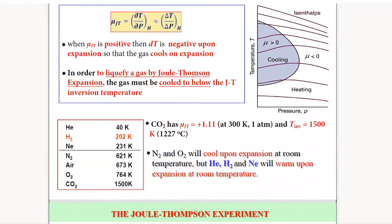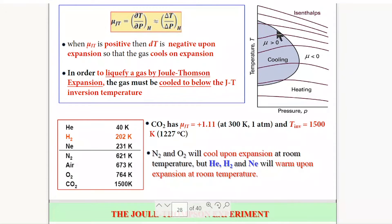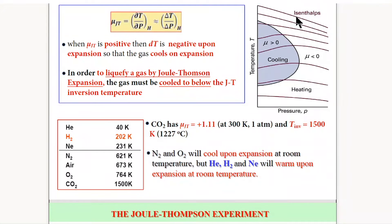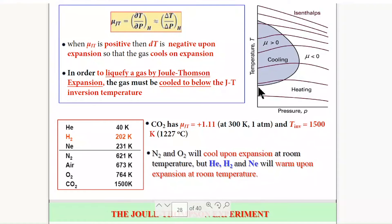We had talked about the inversion temperature curve. On this curve, mu_JT equals zero. Within one side it is positive, and on the other side it is negative. The inversion temperature curve is obtained by joining the locus of all the inflection points in the isoenthalpic curves. The mu_JT value is zero on the inversion temperature curve, and this is the Joule-Thompson coefficient.